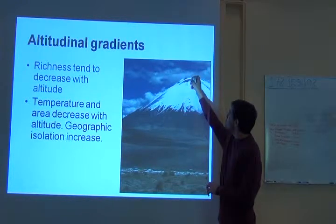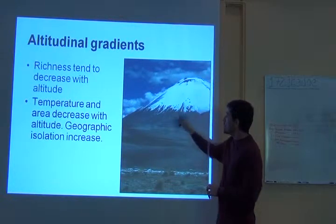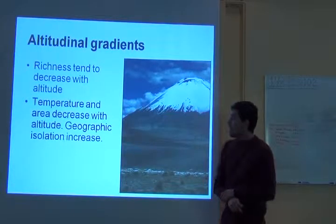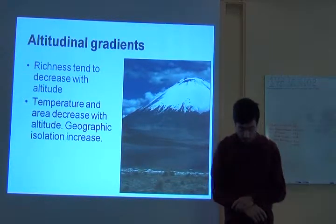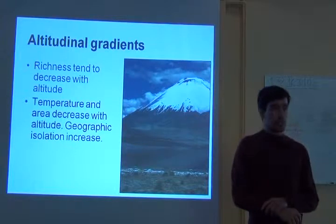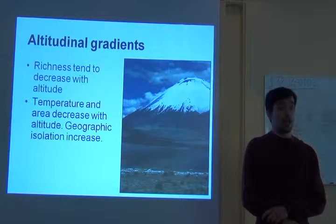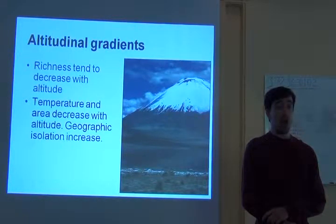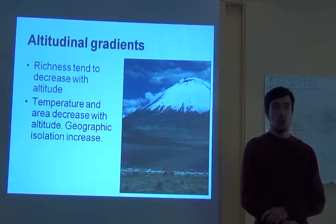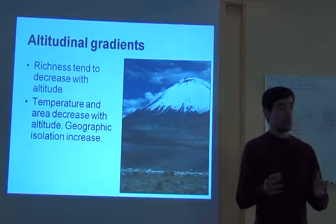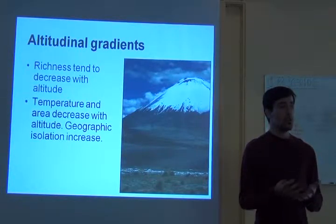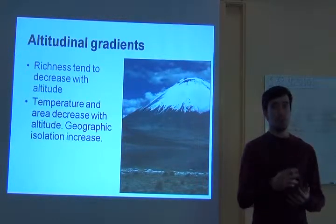You would expect less species here than here. This smaller area on top is simultaneously correlated with the fact that the top of the mountain is more isolated from everywhere else than the bottom. So when you look at a single mountain you actually see multiple ecological processes affecting species richness along this mountain range.